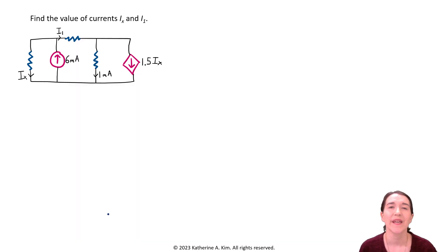So here's our problem, and the first thing we do is read the problem, look at the circuit, and write down what we need to solve for. So find the values of current IX and I1. We look at our circuit over here, and we see IX is on the leftmost branch going downward, and I1 is going from left to right over the top resistor. So we want to find those two currents.